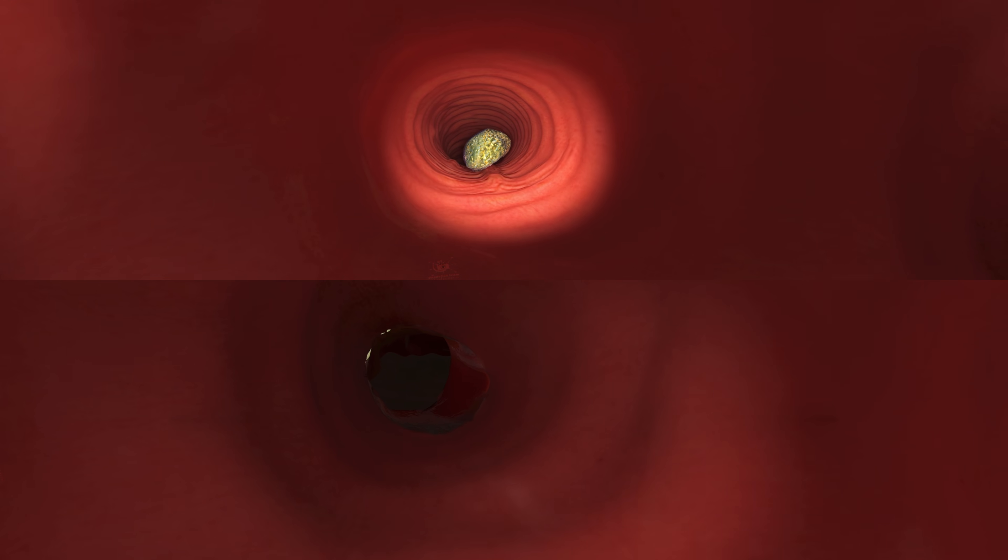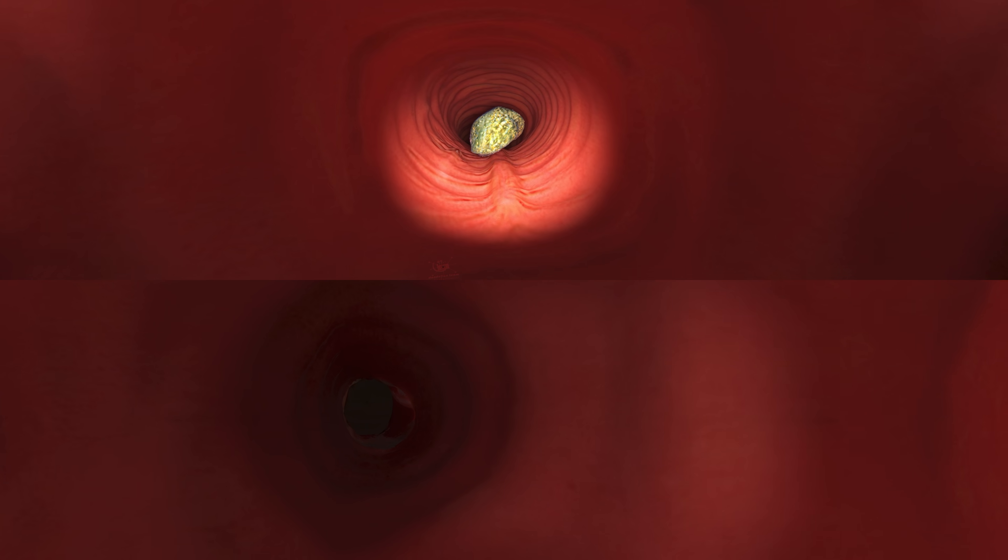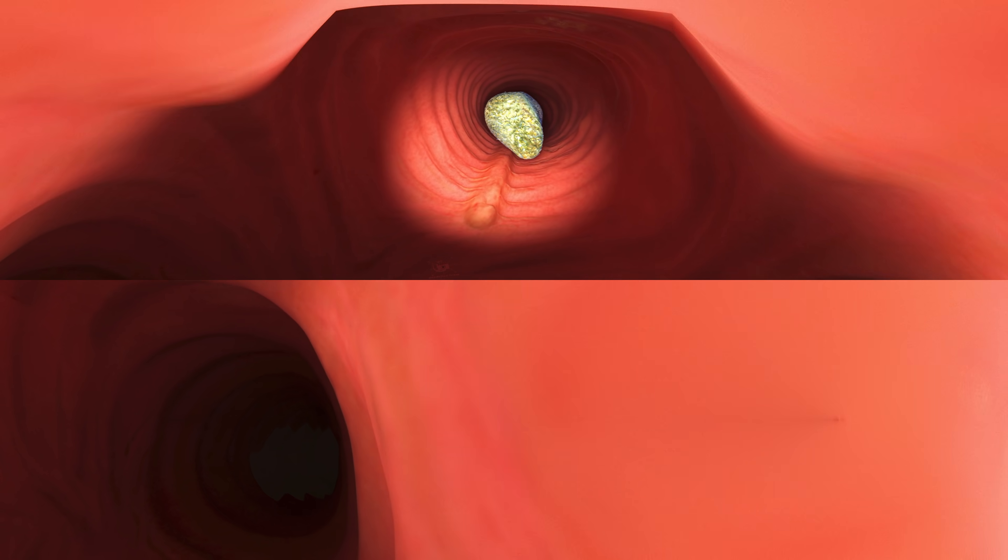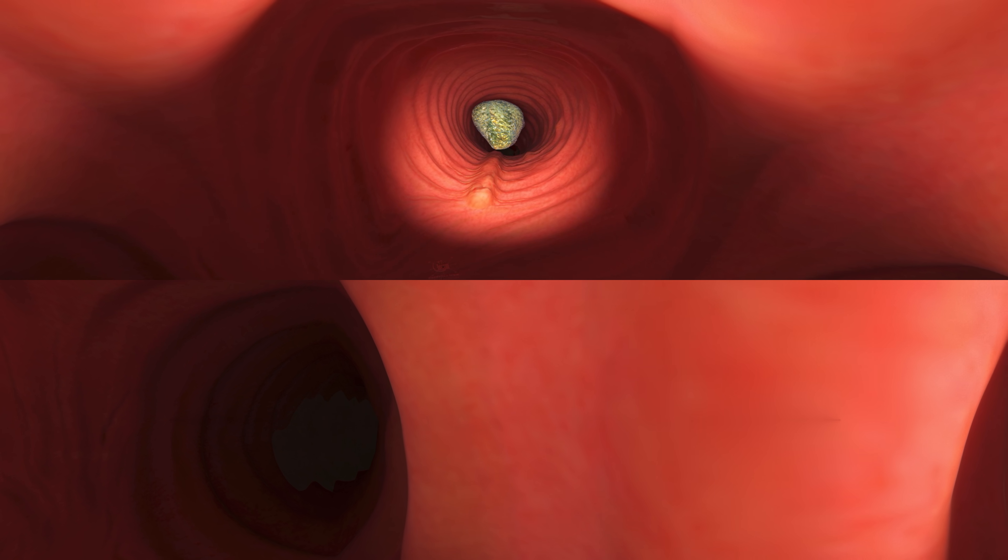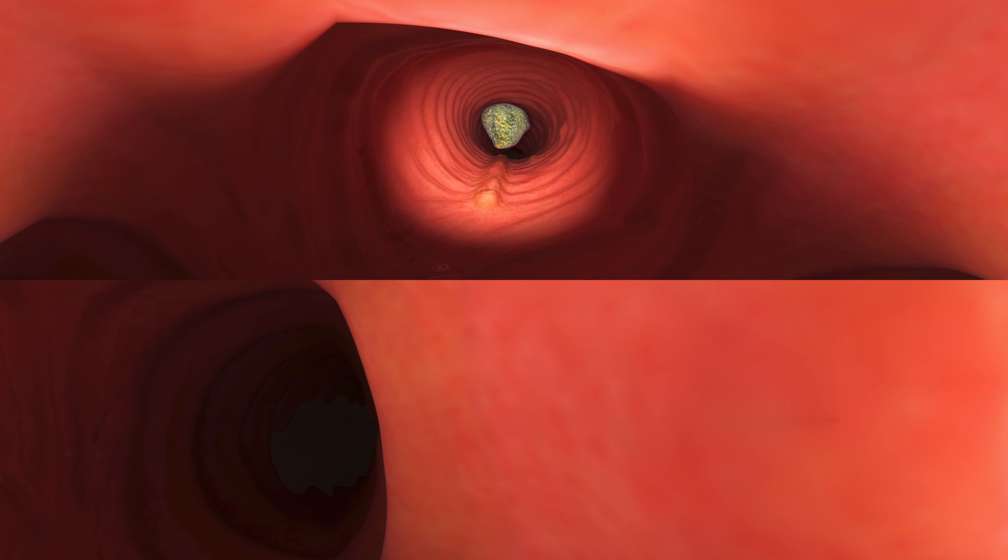The small intestine, or small bowel, is an organ in the gastrointestinal tract where most of the end absorption of nutrients and materials from food takes place. It lies between the stomach and large intestine and receives bile and pancreatic juice through the pancreatic duct to aid in digestion.